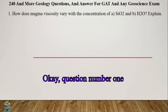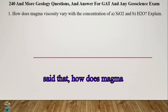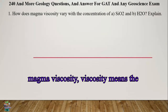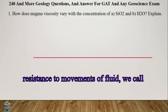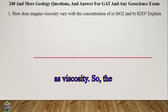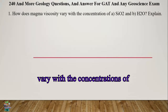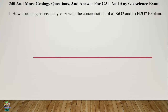Question number 1 from Chapter 4: How does magma viscosity vary with the concentrations of silicon dioxide and water? Please explain. Magma viscosity means the resistance to movement of a fluid. The concentration of magma viscosity varies with the concentrations of silicon dioxide and water content within the magma.